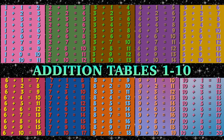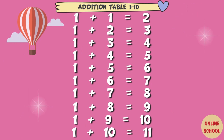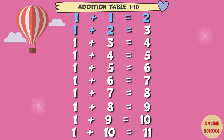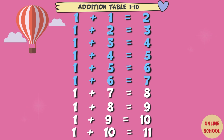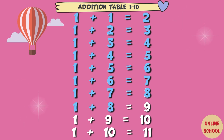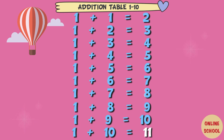Addition Tables 1 to 10. Table 1: 1 plus 1 equal 2, 1 plus 2 equal 3, 1 plus 3 equal 4, 1 plus 4 equal 5, 1 plus 5 equal 6, 1 plus 6 equal 7, 1 plus 7 equal 8, 1 plus 8 equal 9, 1 plus 9 equal 10, 1 plus 10 equal 11.